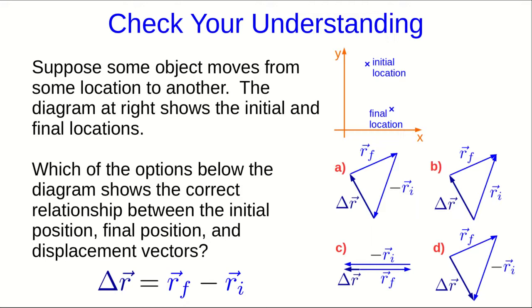Notice, the delta r vector points from the initial location to the final location, and it should appear in the picture. There's only one option, d, which shows a delta r vector pointing in that direction. So already it looks like it has to be that one.